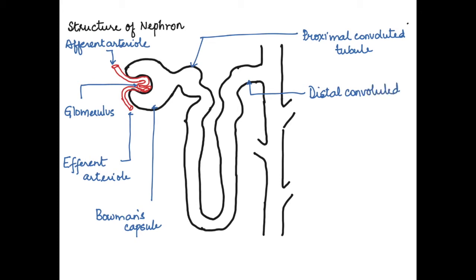The distal convoluted tubule then opens into another tubule called the collecting duct. The collecting duct receives the distal convoluted tubules of different nephrons and opens into the pelvis. There is a loop, the loop of Henle, which has thick and thin limbs not shown here in the diagram.